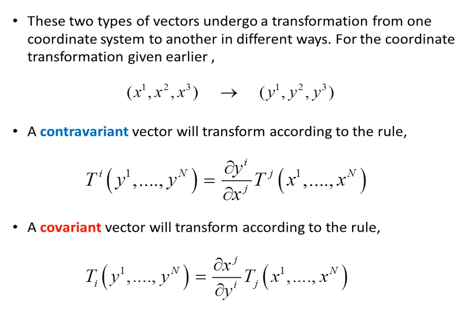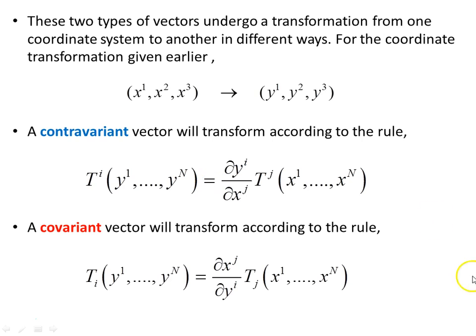These two types of vectors undergo a transformation from one coordinate system to another in different ways. For this coordinate transformation, a contravariant vector will transform according to this rule — remember a vector is a tensor of rank 1, so this is the tensor transformation law. A covariant vector will transform according to the opposite rule. Contravariant is so named because it transforms contrary to the covariant basis. Notice these transformations are the opposite of each other.